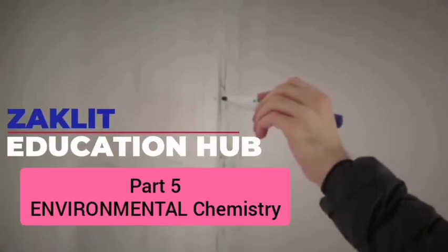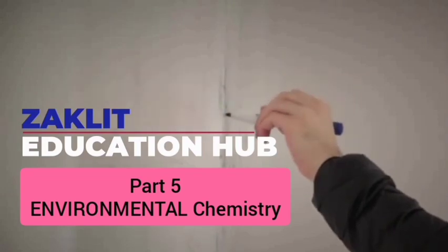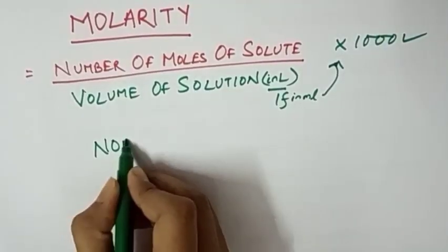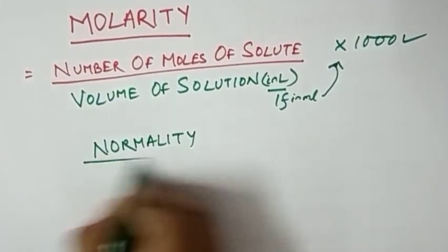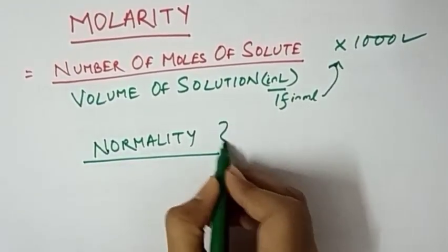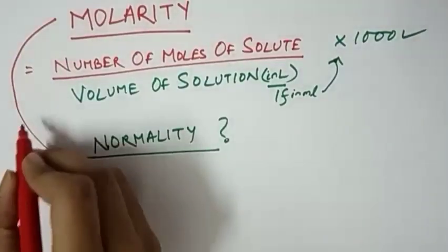Hello everyone and welcome to Jack Lit educational channel. I am Zaki Ahmad and this is the fifth lesson which is the continuity of our fourth lesson for environmental chemistry. In the fourth lesson we learned about molarity, that is number of moles of solute divided by volume of solution in liters.